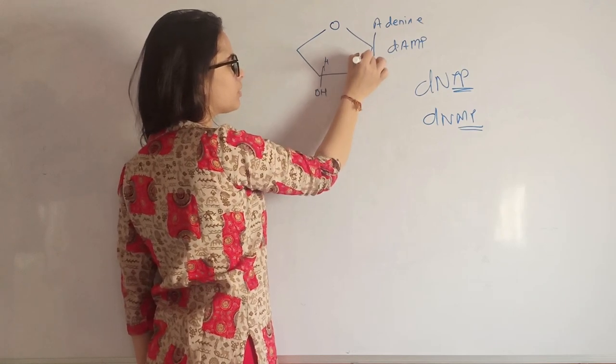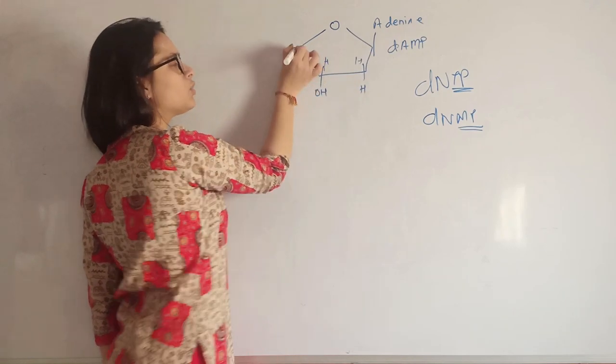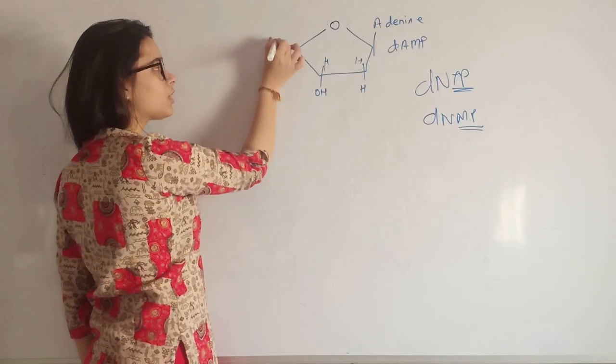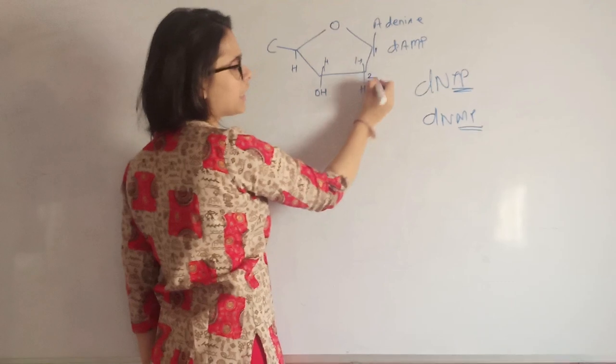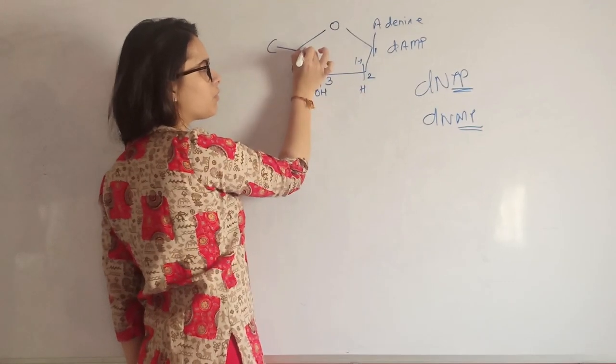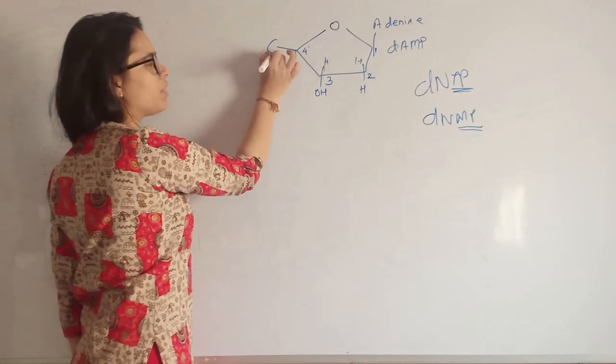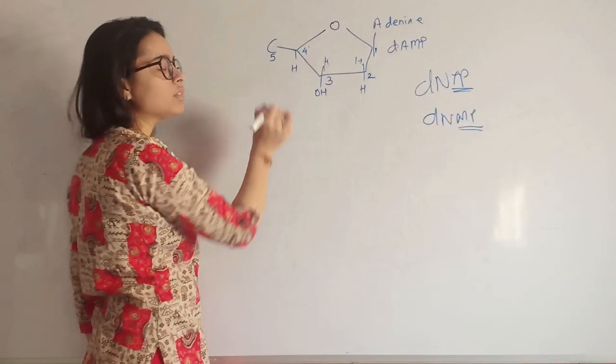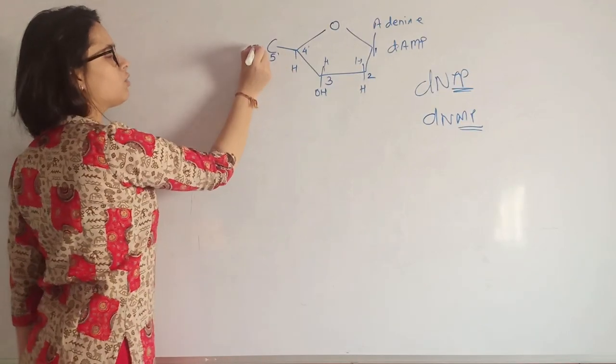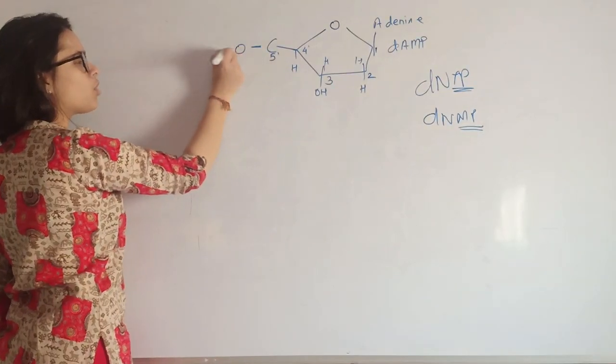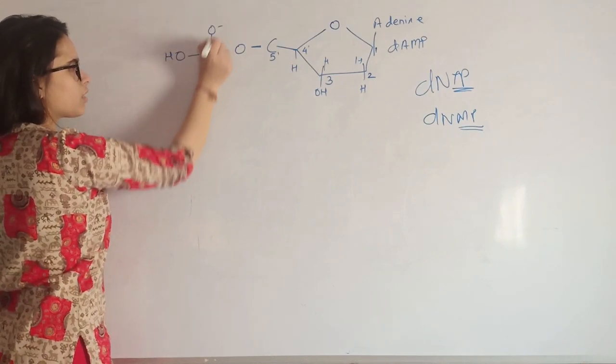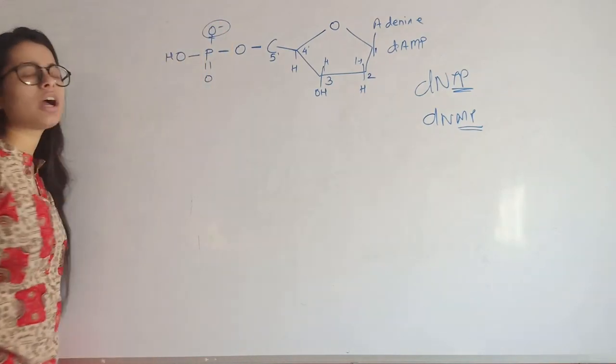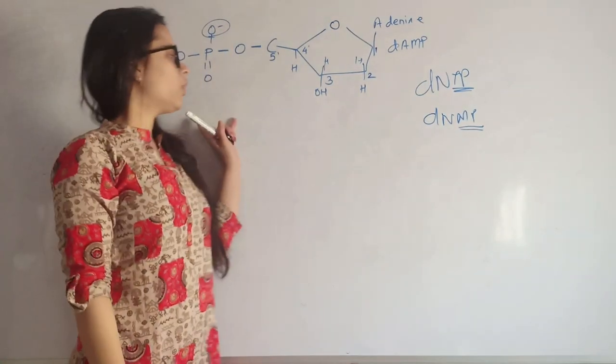It has a hydrogen group, a hydroxyl group, another hydrogen group, and the fifth carbon. This is the first carbon, second carbon, third carbon, fourth carbon, fifth carbon, which is five prime. To it is attached a phosphate group with a single negative charge.